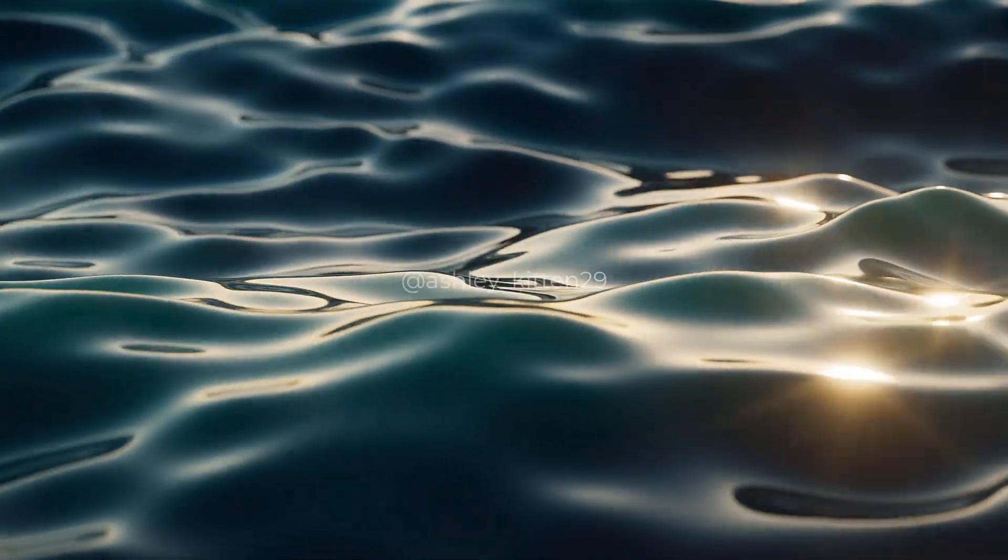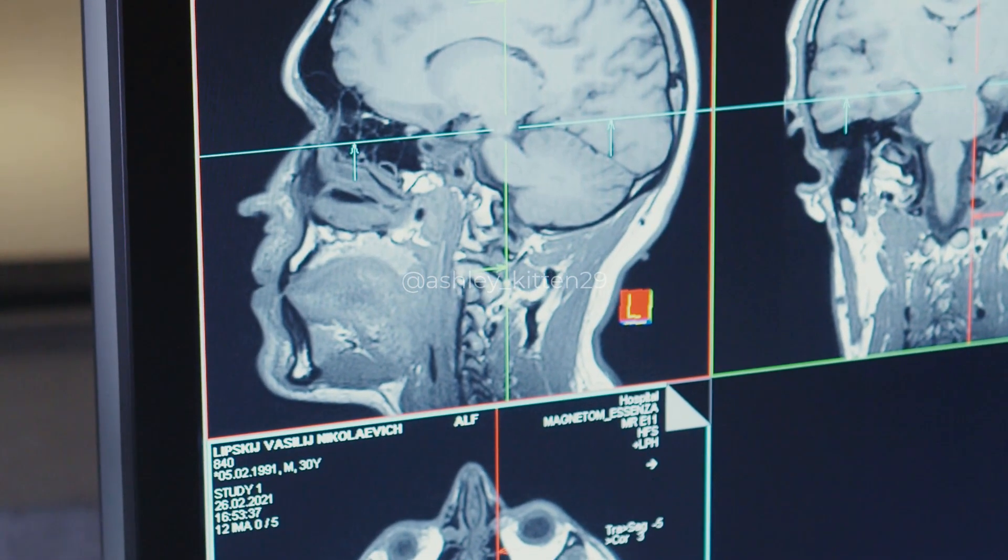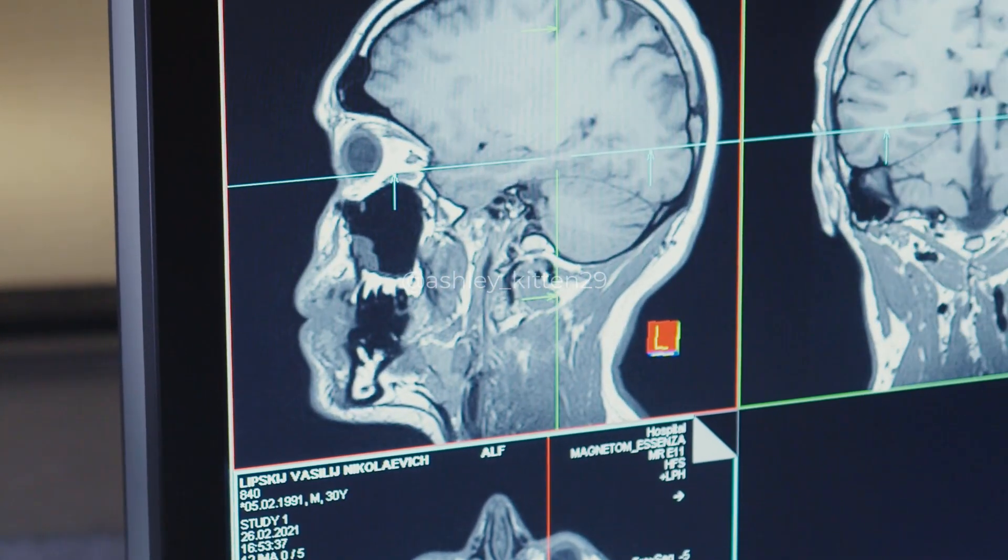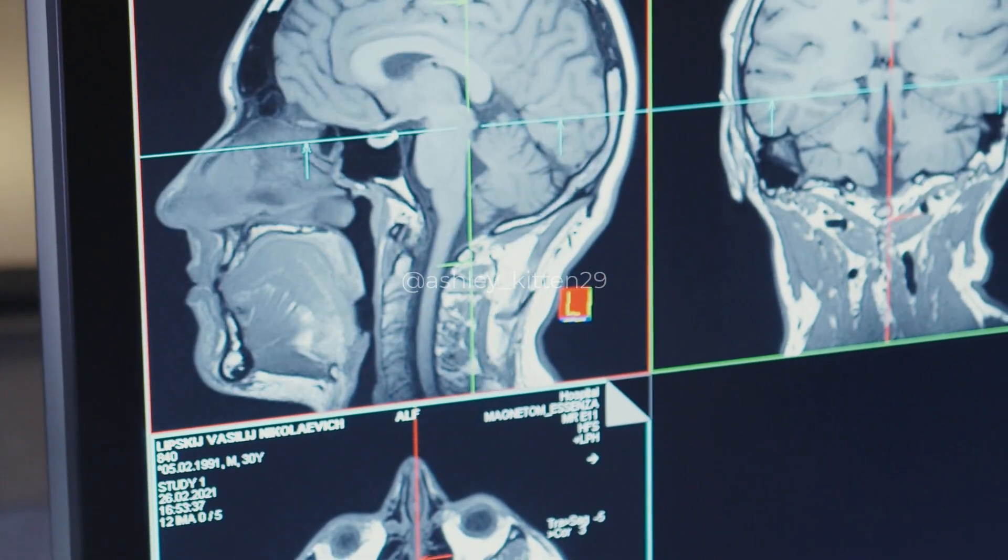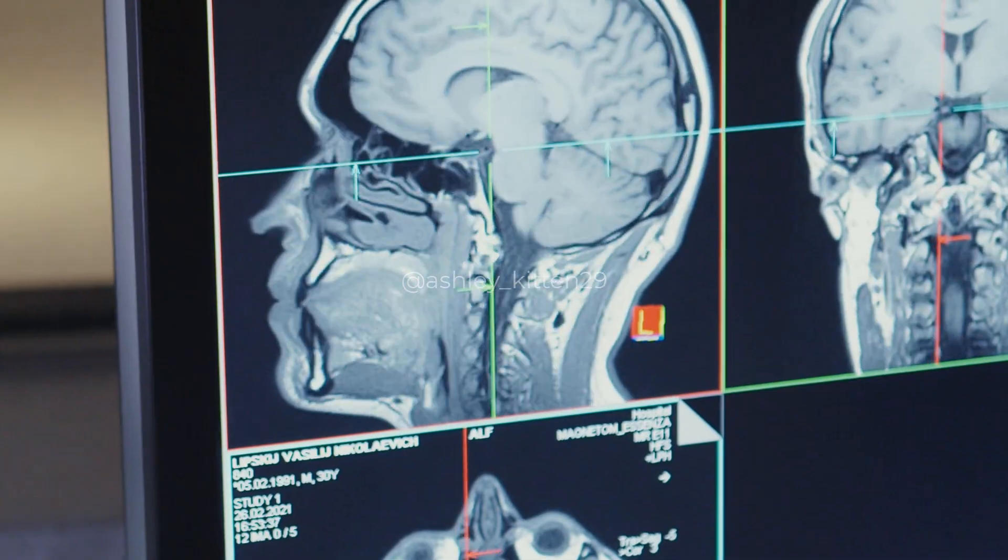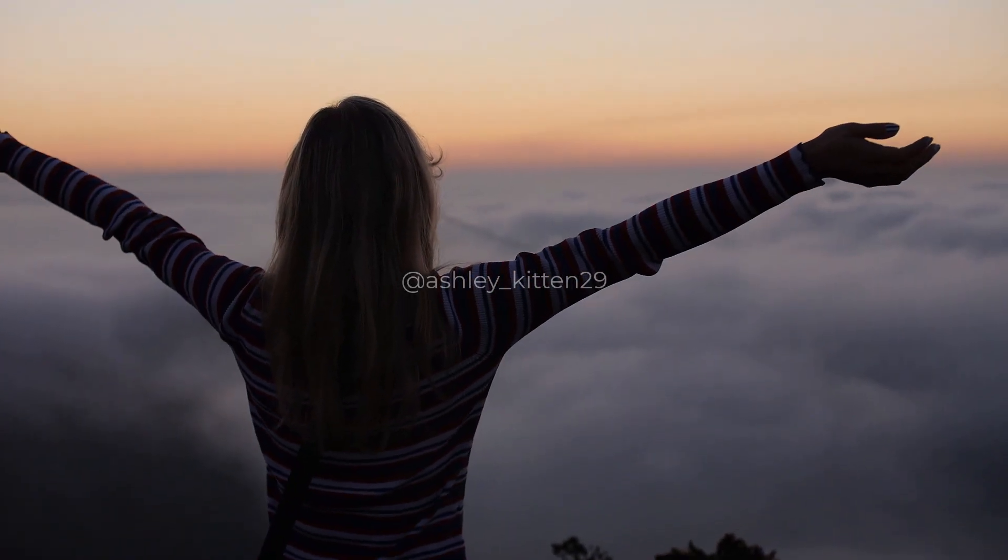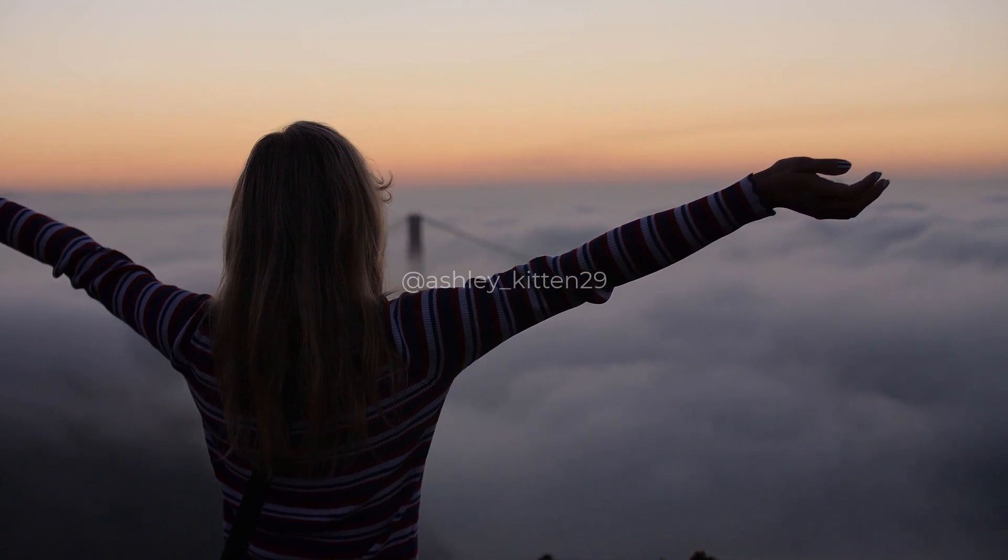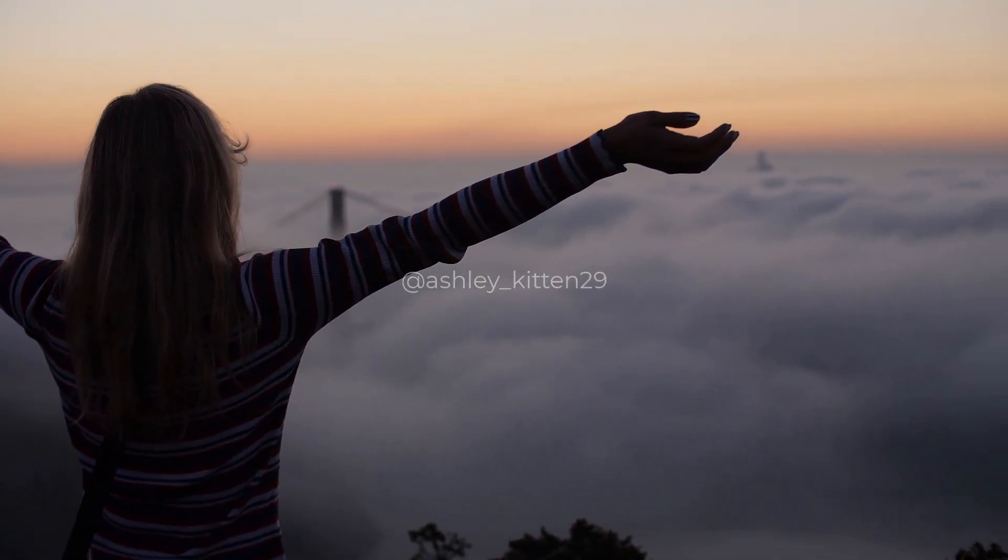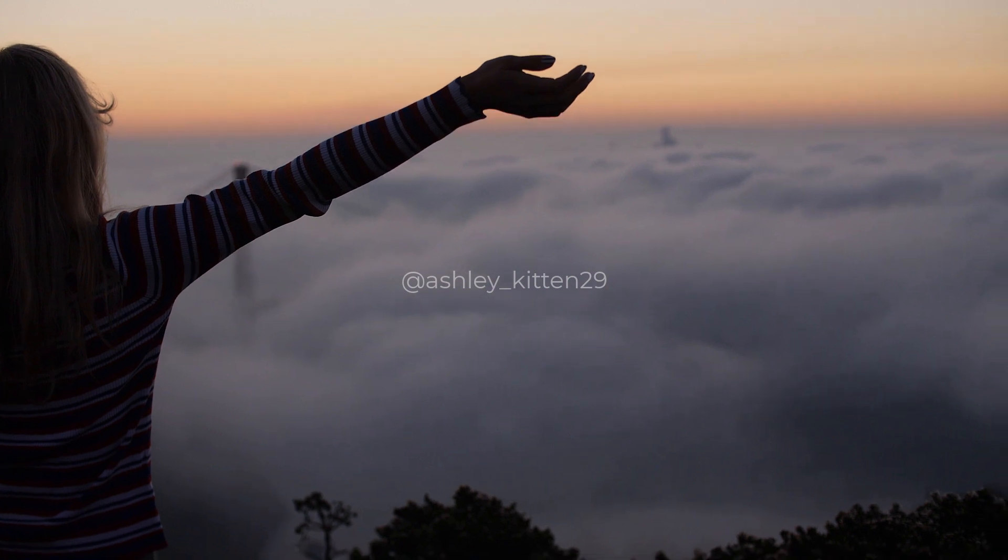Considering that humans are made up mostly of water, Emoto's findings could have far-reaching implications. The human brain, for instance, is comprised of about 85% water. If words and intentions can impact water to such an extent, imagine the possible influence on our thoughts and emotions. The very fabric of our consciousness could be shaped by the language we use and the sentiments we express.